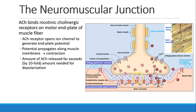The acetylcholine goes into the neuromuscular junction and binds to nicotinic cholinergic receptors on the motor end plate of the muscle fiber. The acetylcholine receptor then opens its ion channel, generates an end plate potential, which propagates along the muscle membrane and leads ultimately to contraction.